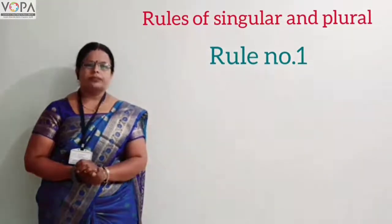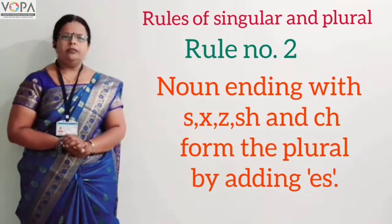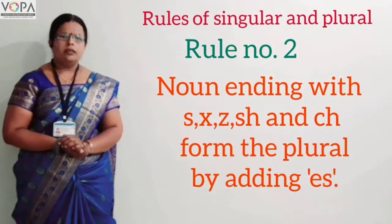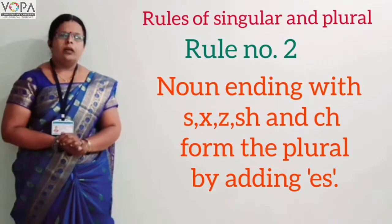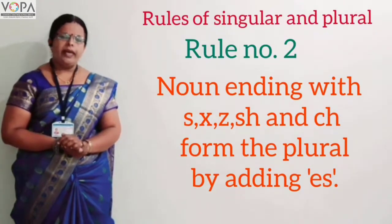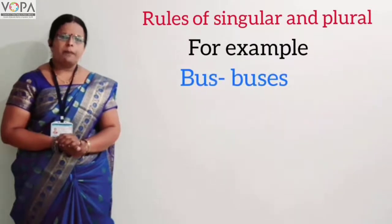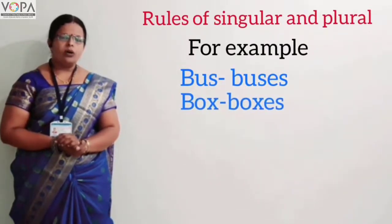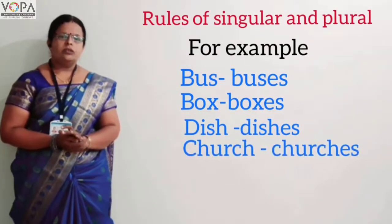Rule number two. Nouns ending with 's', 'x', 'z', 'sh', and 'ch' form the plural by adding 'es'. For example: bus → buses, box → boxes, dish → dishes, church → churches.